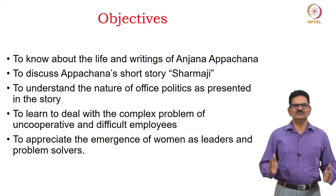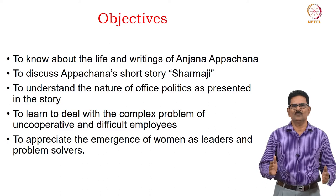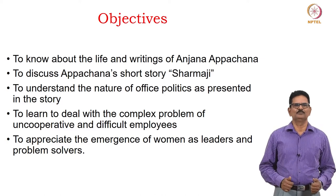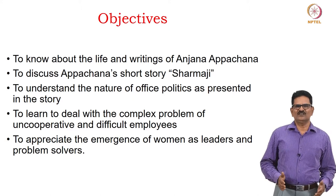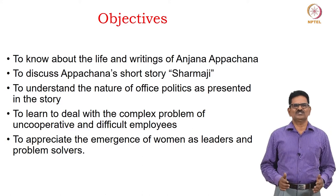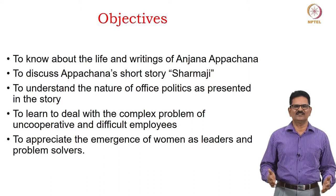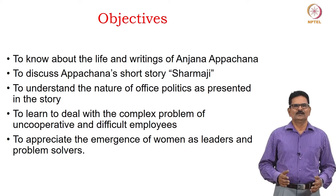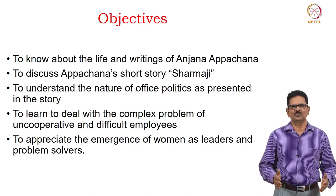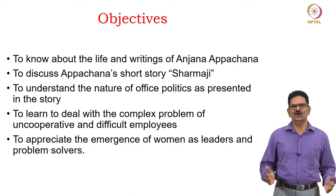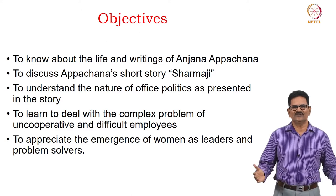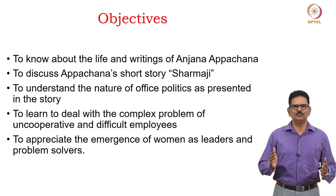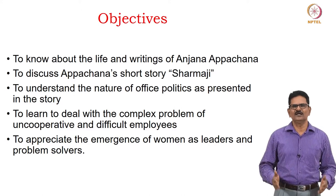The first objective is to know about the life and writings of Anjana Apachana, an Indian diasporic writer who moved to the U.S. The second objective is to discuss her short story Sharmaji. The third is to understand the nature of office politics as presented in the story. The fourth is to learn to deal with uncooperative and difficult employees. The last objective is to appreciate the emergence of women as leaders and problem solvers in organizations.